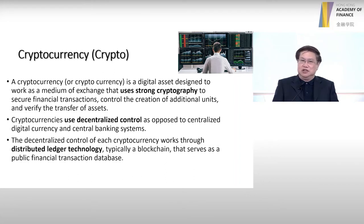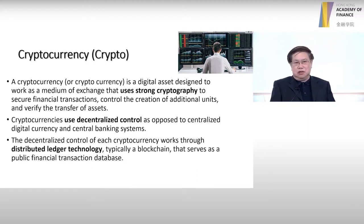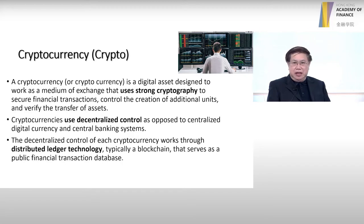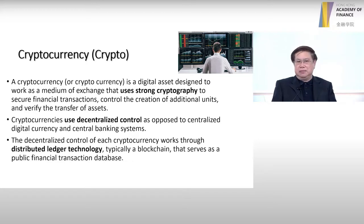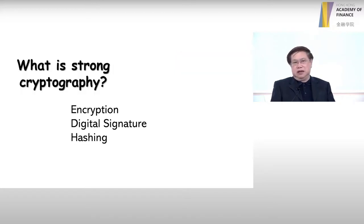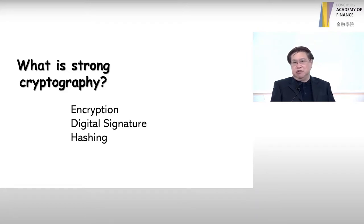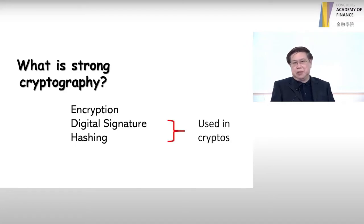Cryptocurrency is actually a digital asset based on strong cryptography. It is also based on distributed ledger technologies, based on which is a decentralized control, which I'll briefly explain in a few minutes. So what is strong cryptography? It's based on the technology behind cryptography: encryption, signature, and hashing. What I will focus on today, which is also used in cryptos, is actually the digital signature technology and the hashing. I will not go into the details of encryption today.